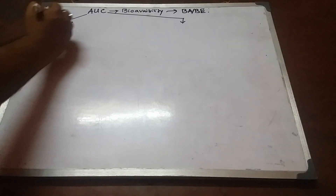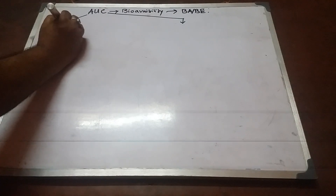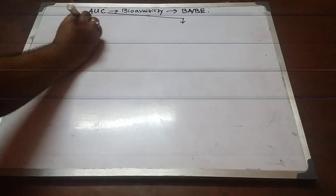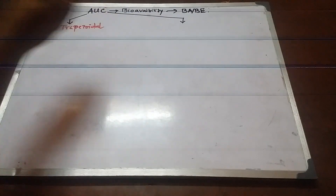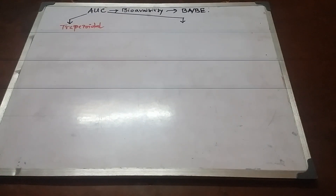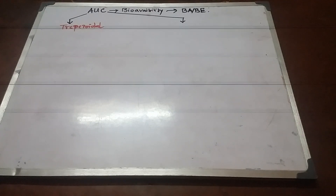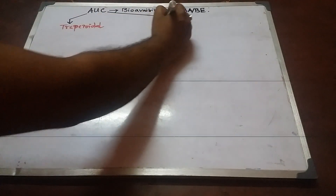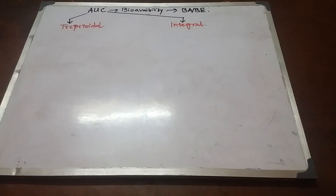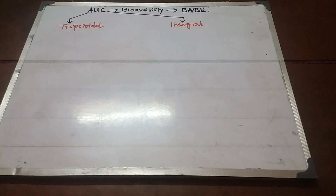The major methods of determination of bioavailability can be written in two ways. The first one is the graphical method, also known as the trapezoidal method. The other method, which is very essential for determining bioavailability non-graphically, is known as the integral method. So we have two methods: the trapezoidal method and the integral method.